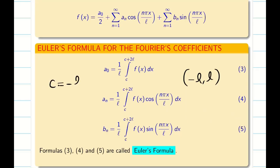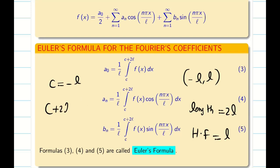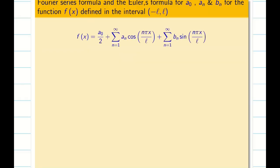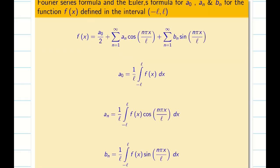Here my lower limit c is minus L, and the length of the interval is 2L, so the half length is going to be L. So c plus 2L — where L is the half length — we know c is minus L plus 2L. So my upper limit is going to be L and lower limit is minus L. So I can write the formula in terms of minus L comma L: A naught, A n, and B n.